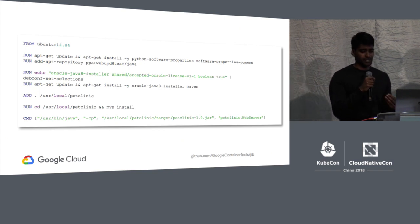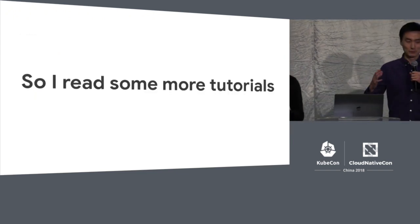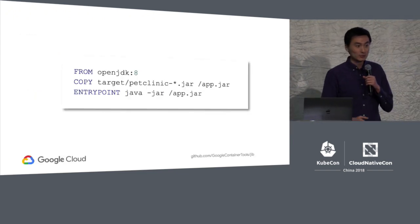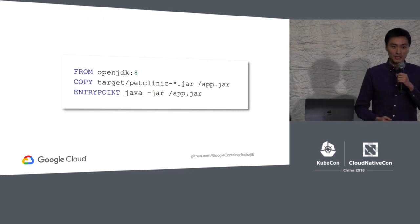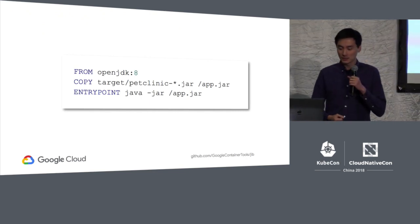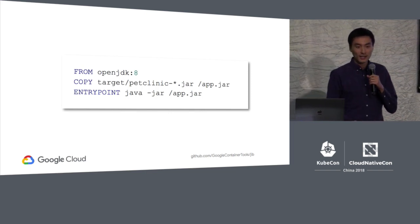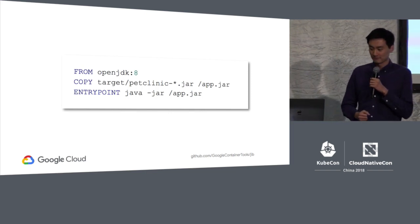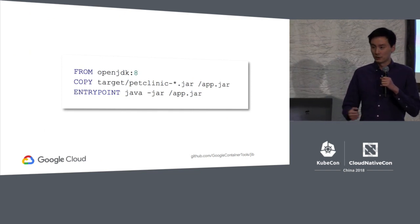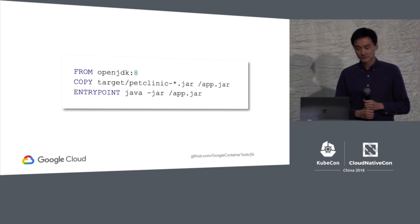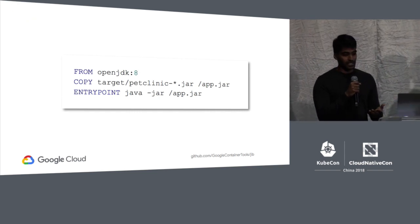Docker has come a long way, and there must be a simpler way to do this. Reading more tutorials, I'm able to write a much better Dockerfile using a well-maintained base image on Docker Hub — the OpenJDK base image. All I'm doing is copying my fat jar into my container image and setting my entry point to run that fat jar. This is a lot simpler, fewer layers, a lot more readable. It is a lot easier to understand what's happening.